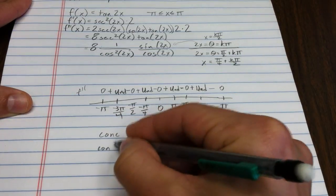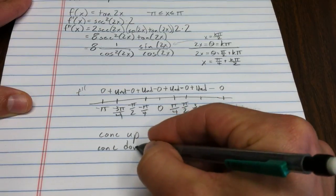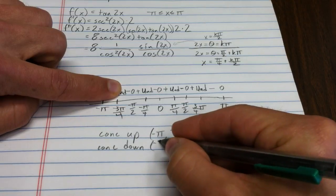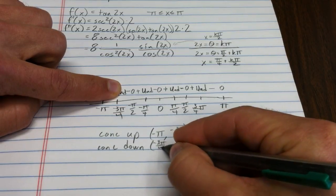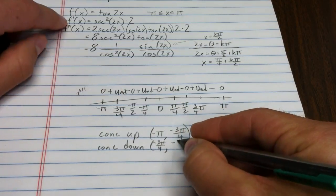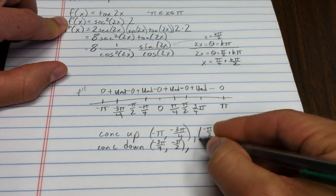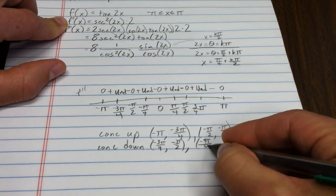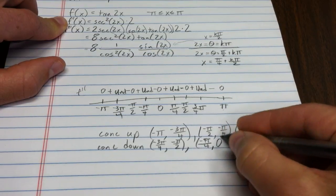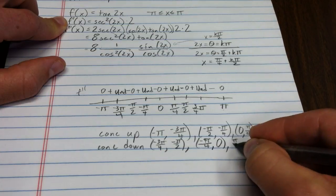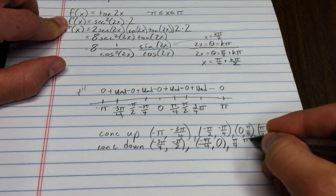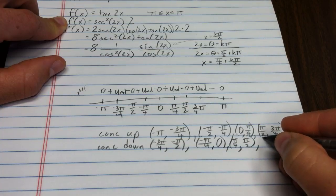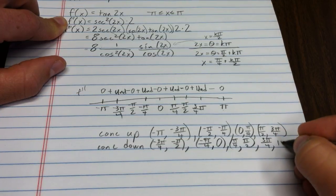And we're concave down on the other intervals. So, I'm concave down from negative 3 pi fourths to negative pi halves. Negative pi fourths to 0. Pi fourths up to pi halves. And thrillingly, from 3 pi fourths up to pi.